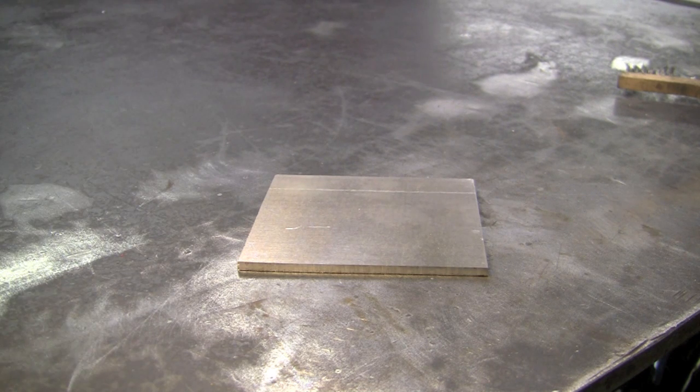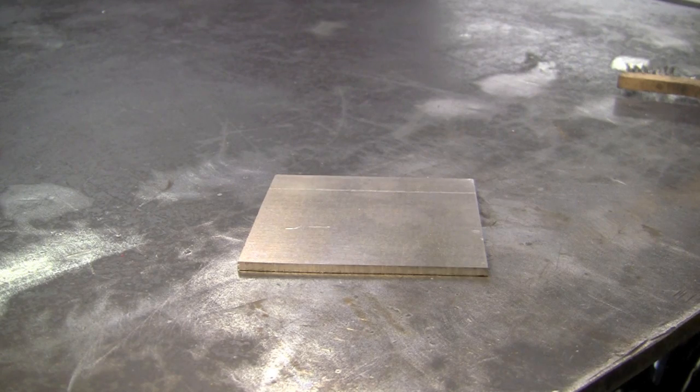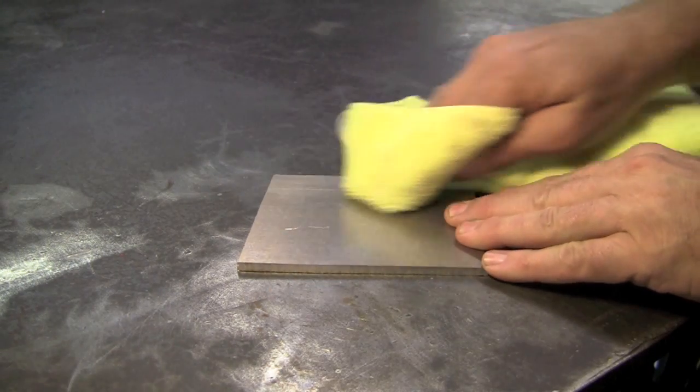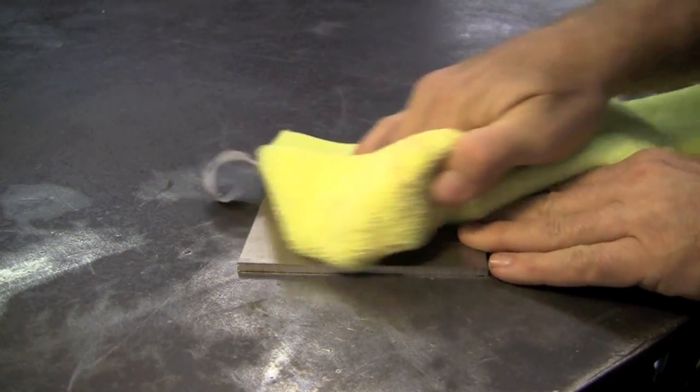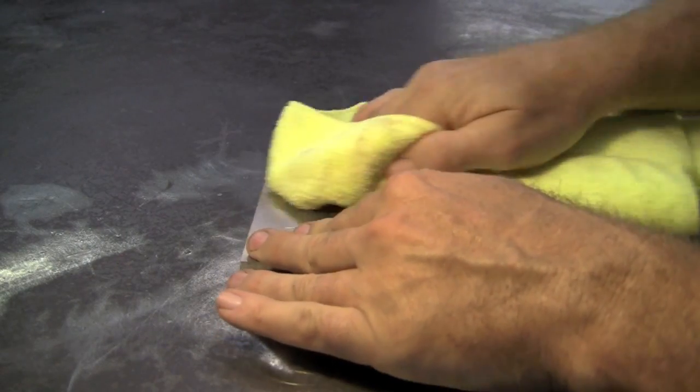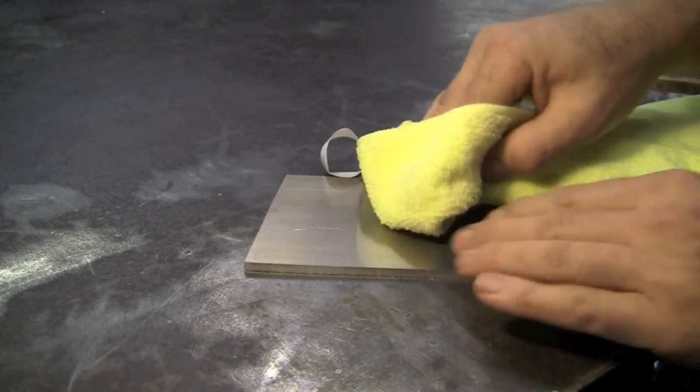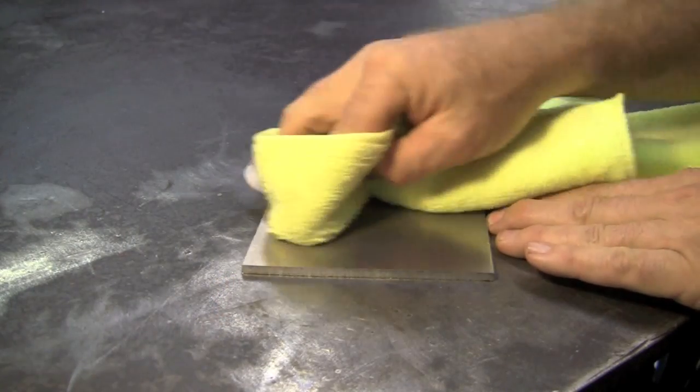So I have some denatured alcohol and a lint free cloth and basically I'm just going to wipe down the oil off of this and we get a nice clean finish.